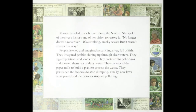Marion traveled to each town along the Nashua. She spoke of the river's history and of her vision to restore it: 'No longer do we have a river. It's a stinking, smelly sewer. But it wasn't always this way.' People listened and imagined a sparkling river full of fish. They signed petitions — and petitions are documents signed by many people that request government officials to take action or change a policy — and sent letters. They protested to politicians and showed them jars of dirty water. They convinced the paper mills to build a plant to process the waste, and persuaded the factories to stop dumping. Finally, new laws were passed, and the factories stopped polluting.